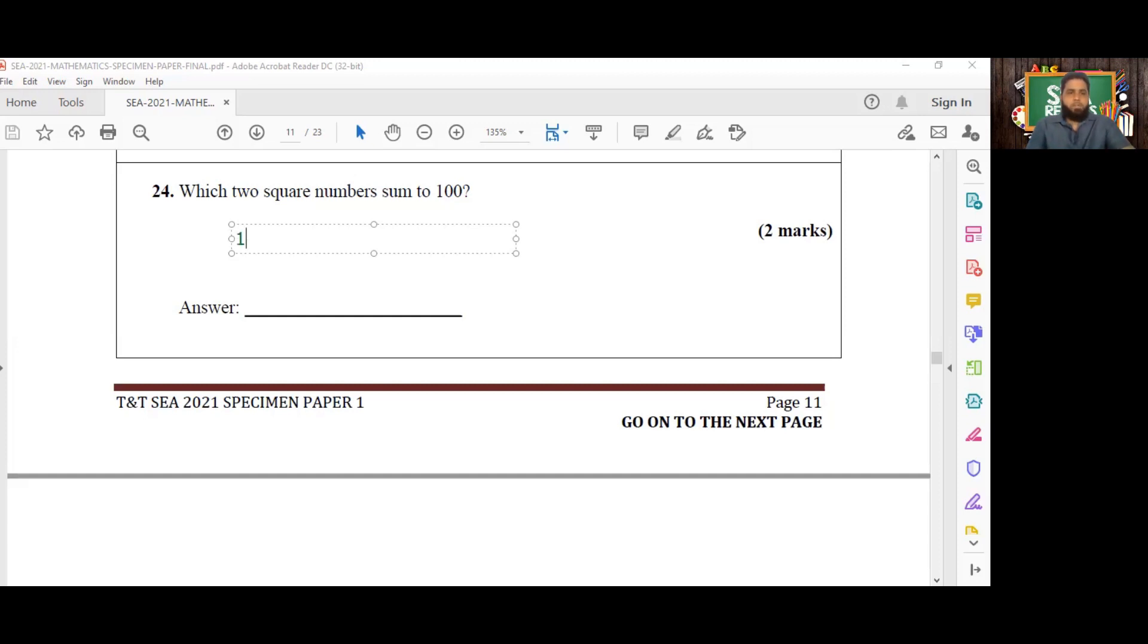We'll start with 1 squared which is 1, and we have 2 squared which is 4, 3 squared which is 9, 4 squared which is 16, 5 squared which is 25, 6 squared which is 36, 7 squared which is 49, 8 squared which is 64, and 9 squared which is 81.